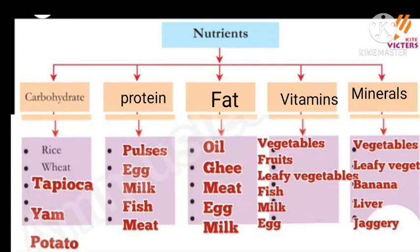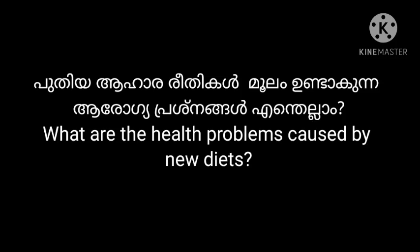Protein sources include pulses, egg, milk, fish, and meat. Fat sources include oil, ghee, meat, egg, milk, and salt. Vitamins are found in vegetables, fruits, leafy vegetables, fish, meat, milk, and egg. Minerals are found in vegetables, leafy vegetables, banana, liver, jaggery, and sugar.